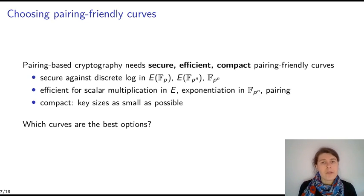So what do we need for our pairing-friendly curve? We need secure, efficient and compact curves. So we need secure, again, discrete logarithm computation on the curve and in the finite field. We need an efficient scalar multiplication on the curve, fast exponentiation in the finite field and efficient pairing. And as well, we need compact. That is, we want to have as small as possible parameters and key size. So which curves are the best options?